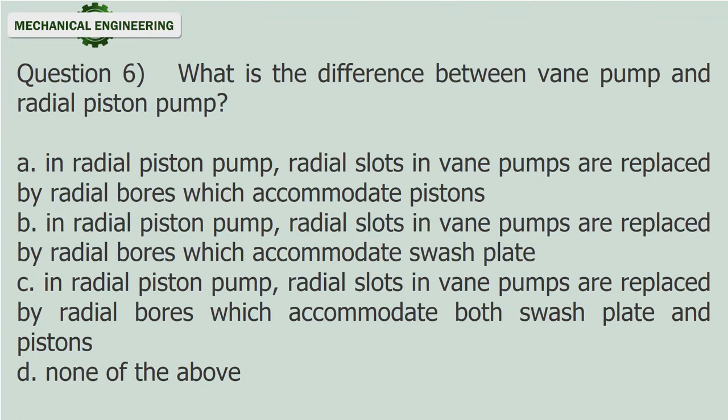Question 6: What is the difference between a vane pump and radial piston pump? A) In radial piston pump, radial slots in vane pumps are replaced by radial bores which accommodate pistons. B) replaced by radial bores which accommodate swash plate. C) replaced by radial bores which accommodate both swash plate and pistons. D) none of the above.